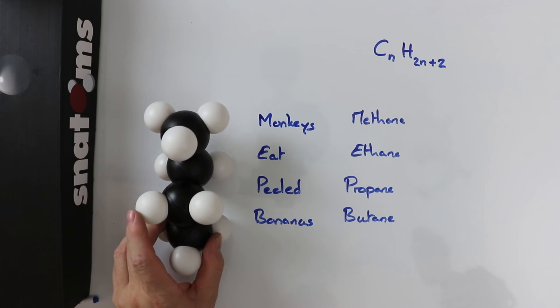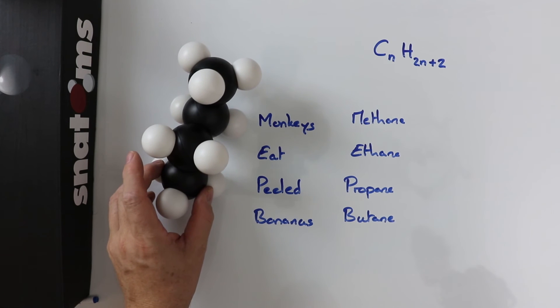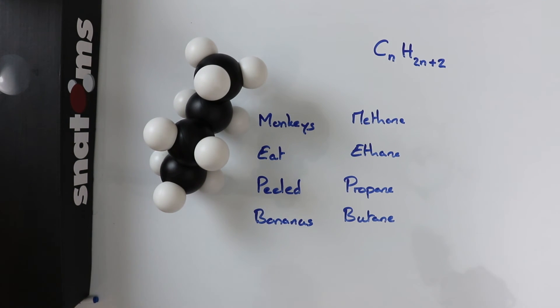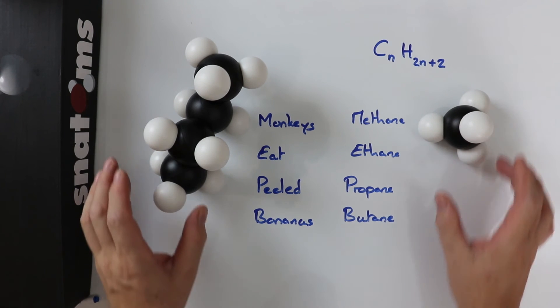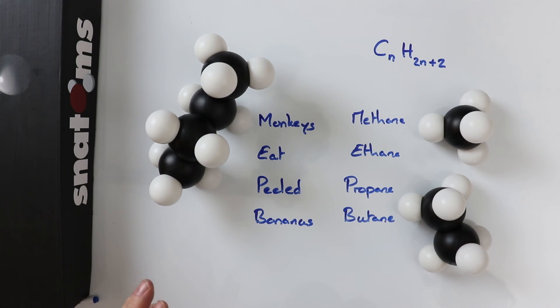The properties of these hydrocarbons change as the chains get longer and longer. The shorter the chain, the lower the boiling point. The first four - methane, ethane, propane, and butane - are gases.